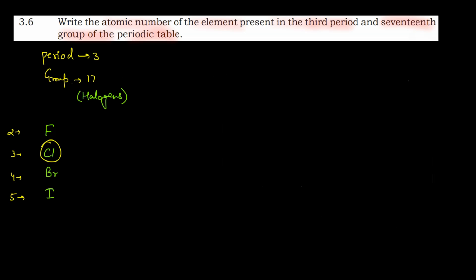So the atomic number of the element present in the 17th group and 3rd period is 17. The name of the element is chlorine, written as Cl with atomic number 17. This is the answer to this question. We will see you in the next question — bye-bye.